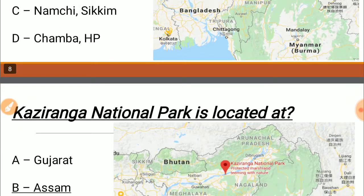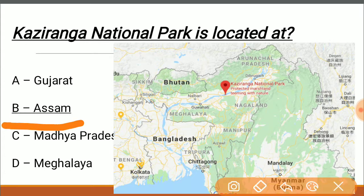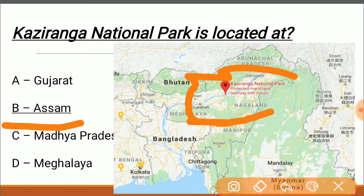The Kaziranga National Park is located in the state of Assam, as shown on the map. The one-horned rhinoceros is the main attraction and the main animal found here. It is a protected marshland teeming with nature — you will learn more about it when we discuss the Ramsar Convention.